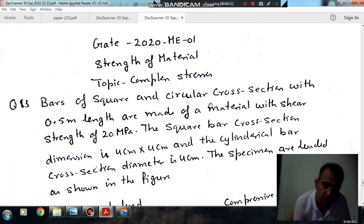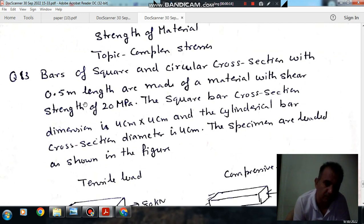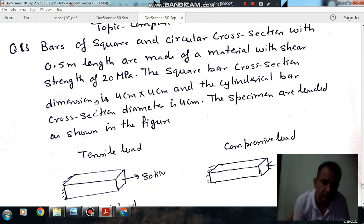Bars of square and circular cross-section with 0.5 meter length are made of a material with shear strength of 20 MPa. The square bar cross-section dimension is 4 cm × 4 cm, and the cylindrical bar cross-section diameter is 4 cm.